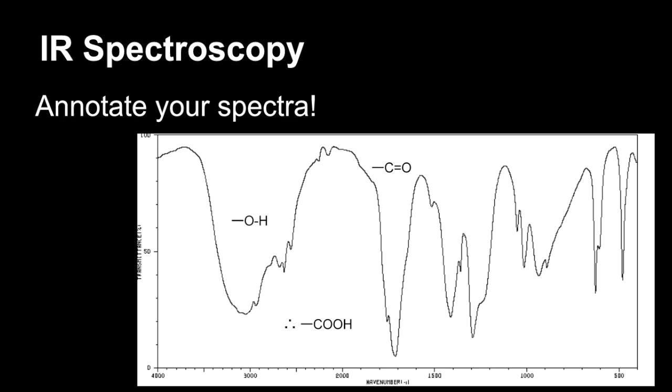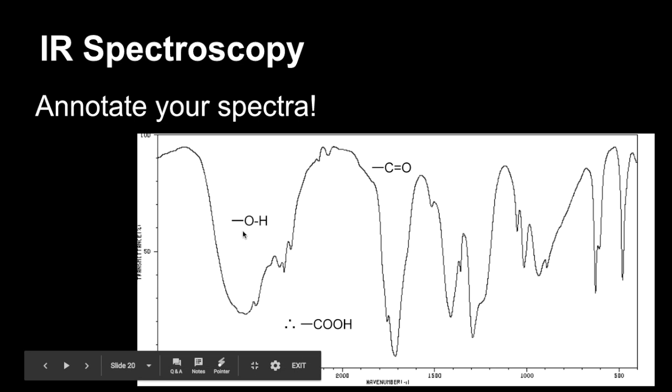Infrared spectroscopy. Don't forget to annotate your spectra. So in this one here, I've said this is the OH of a carboxylic acid group. And this is the C double bond O. And therefore, it's definitely a carboxylic acid.